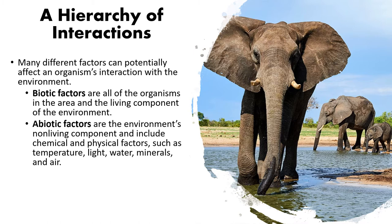We also have abiotic factors. The prefix 'a' before biotic means non-living. These include all the chemicals in the environment — water, carbon, nitrogen, phosphorus — as well as light and temperature. All of these are going to influence how an organism lives its life. So you have to look at both the biotic, the living, and the non-living aspects of the environment.